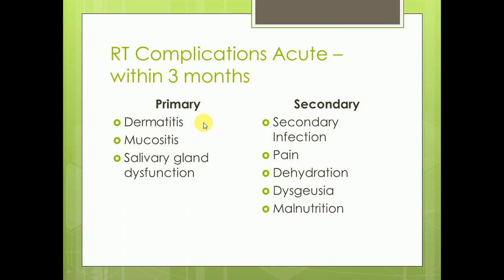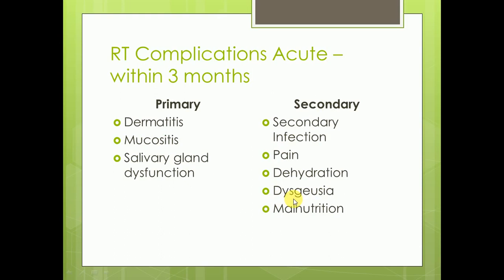Complications of radiotherapy are divided into acute (within three months) and late. Acute complications are divided into primary — dermatitis, mucositis, salivary gland dysfunction — and secondary — secondary infection, pain, dehydration, and malnutrition.